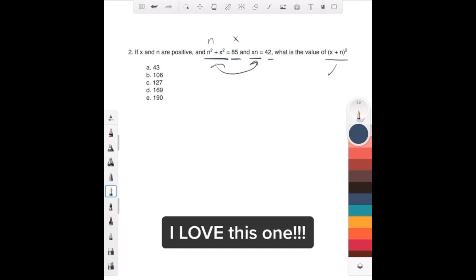No, here's what we're gonna do. So, x plus n squared, x plus n times x plus n, right? You FOIL that out and you get x squared plus 2xn plus n squared.